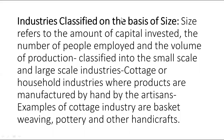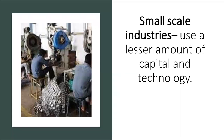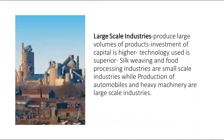To understand it better, let's look at the definition of small-scale industry. Small-scale industries use a lesser amount of capital and technology. On the contrary, large-scale industries produce large volumes of products, invest more capital and use high technology. Silk weaving and food processing are examples of small-scale industries, while production of automobiles and heavy machinery are examples of large-scale industries.